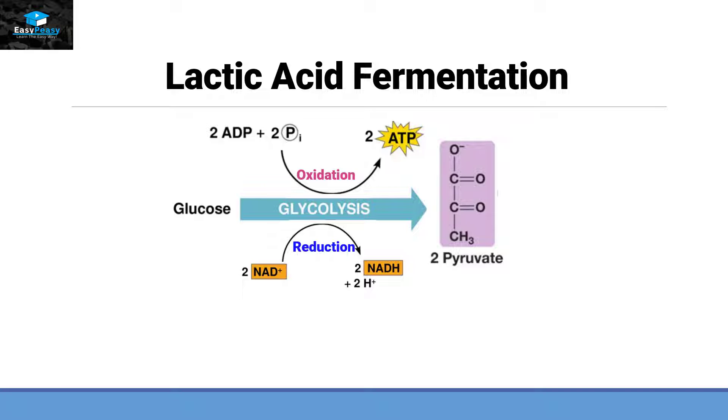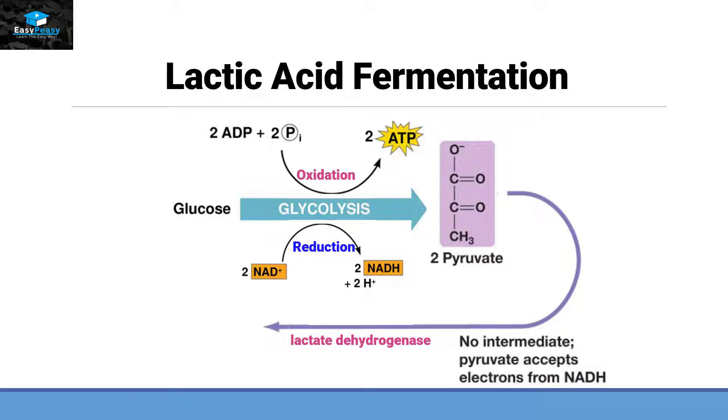Now in order to perform glycolysis again we need this NAD+, and it will be generated again when pyruvate with the help of lactate dehydrogenase converts itself into two lactate molecules. This process of converting pyruvate into lactate is a reduction process because it gains two hydrogen atoms from NADH, converting itself back into NAD+. So this process of converting NADH to NAD+ is an oxidative process. Now this NAD+ is available for glucose to perform glycolysis again.